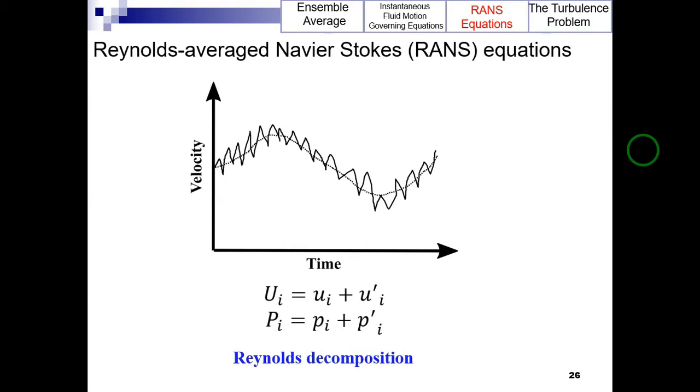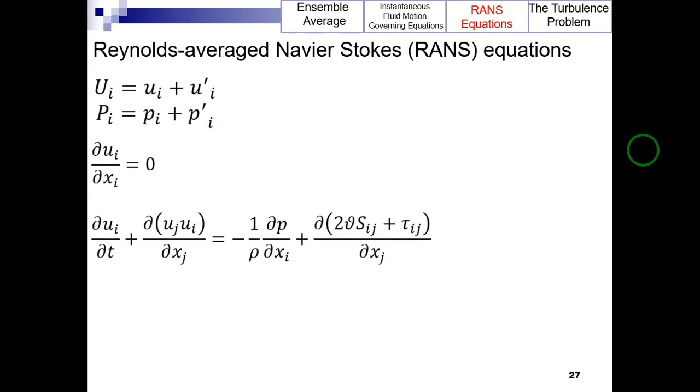Substitution of the decomposed values of the variables into the Navier-Stokes equations and performing the ensemble averaging of the resultant equations gives the following equations, which are the RANS equations. Keep in mind that the ensemble average of a fluctuating quantity is zero. Another important point is that the RANS framework is based on ensemble averages, not time averages.